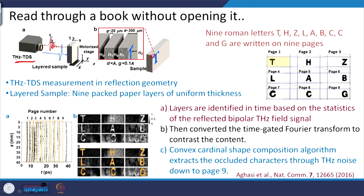Terahertz TDS can be used to read through a book without opening it. They took 9 pages, each of uniform thickness of 300 microns with a gap of 20 microns between them, wrote the letters T-H-Z on each page, and stacked them. Using a motorized stage and TDS, they imaged each page by taking a Fourier transform of the terahertz signal to access the information from the back of each page even without opening the stack.